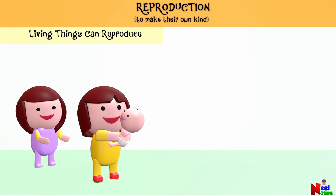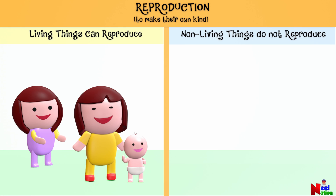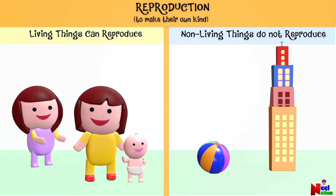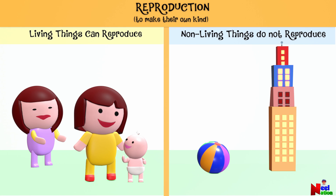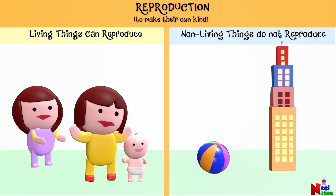But non-living things do not reproduce. Non-living things such as toys or buildings don't have babies or make more of themselves. Your favorite toy doesn't have baby toys — if you get a new toy, it's usually made by people, not by the toy itself.